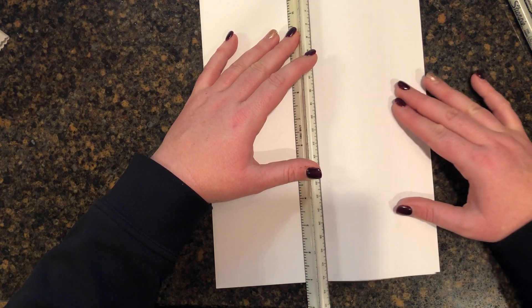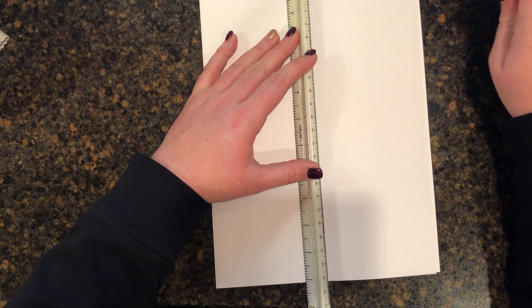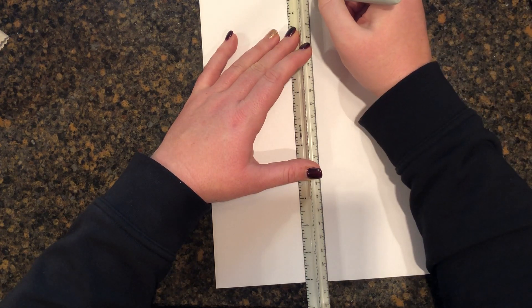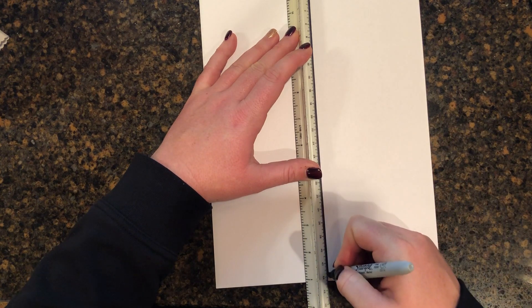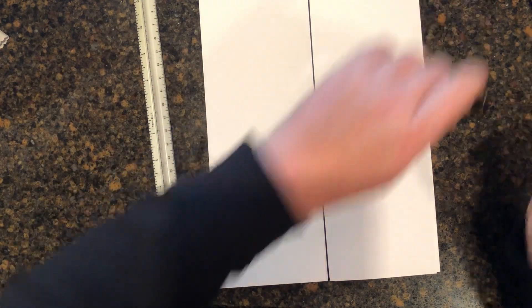Take your ruler and find that crease edge in your paper. All you're gonna want to do is from the top of the page to the bottom of the page, you're gonna draw a straight line down. So I'm just gonna start at the top and I'm gonna go all the way down. Okay, boom, there is my awesome line.